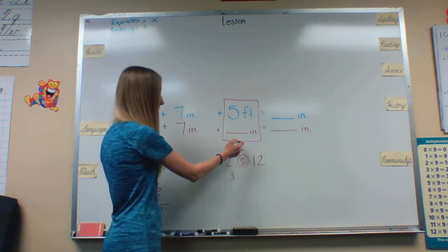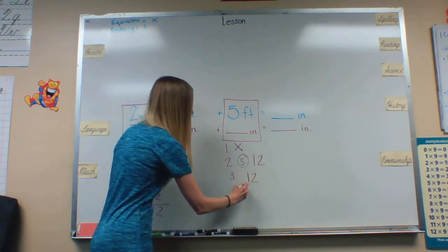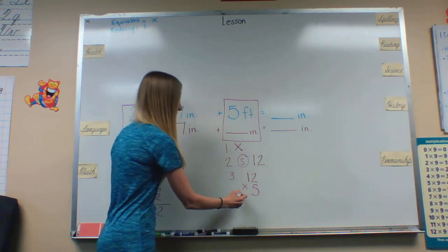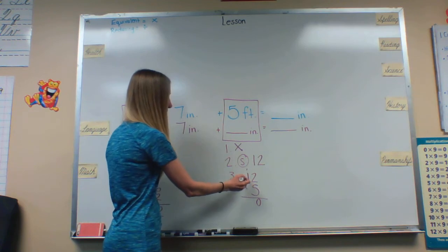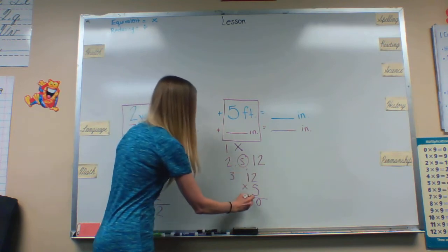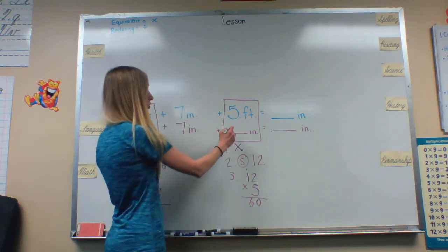And then we will take our two numbers and we will multiply them. So 12 times 5. 5 times 2 equals 10, carry 1. 5 times 1 is 5 plus 1 is 6. That equals 60.